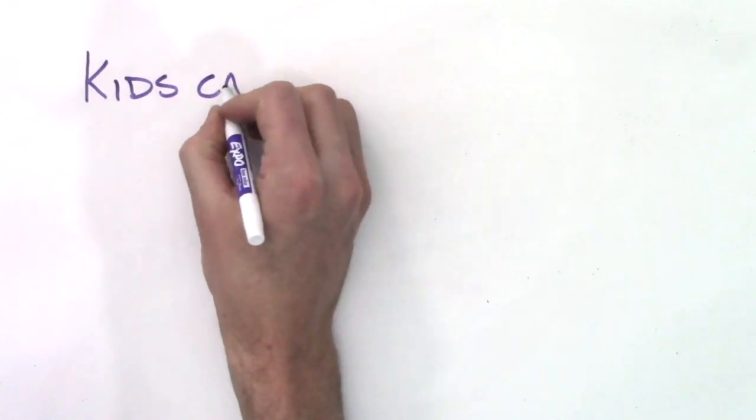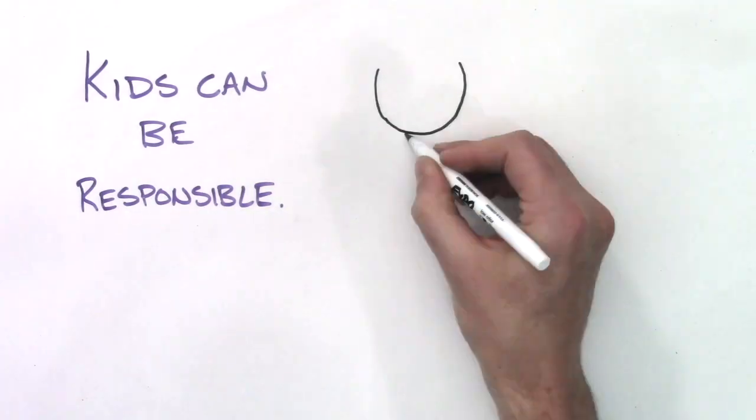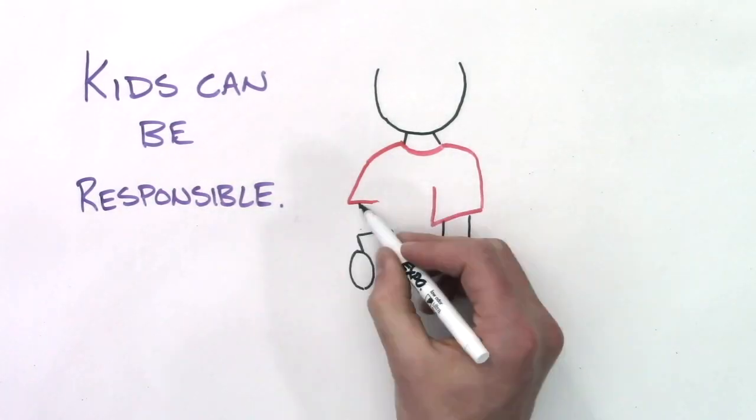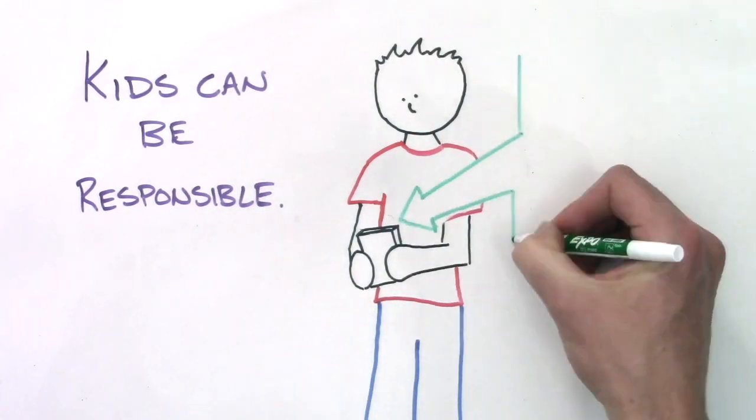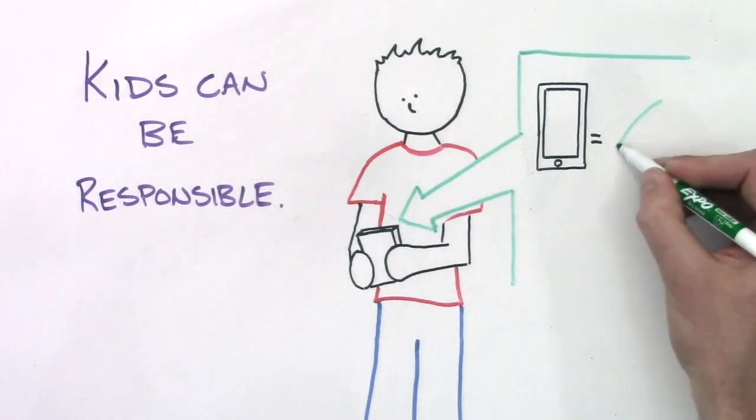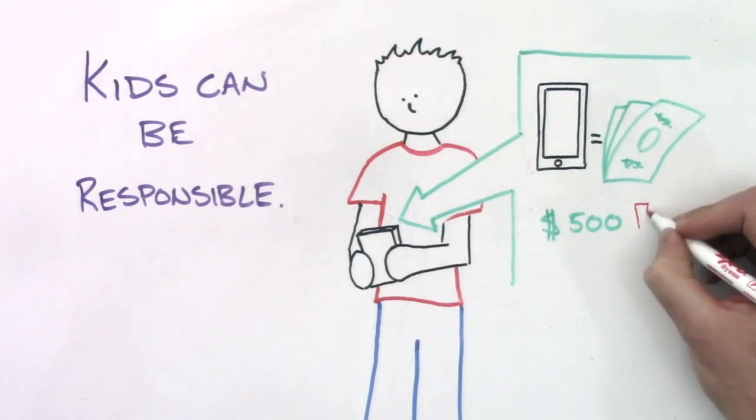Let's remember that kids are capable of taking on responsibility as long as we set the expectation that they'll be responsible. Many of them are walking around every day caring for a $500 cell phone. I didn't even know what $500 looked like until I was halfway through high school.